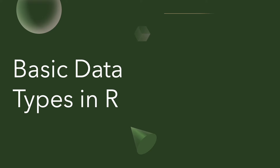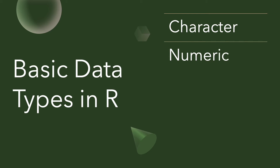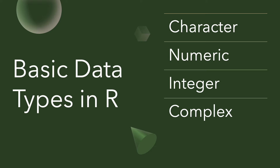In R we have the character data type, which takes individual characters — alphabets, numbers, or special characters. Then we have the numeric data type, which can take any kind of numbers: whole numbers, natural numbers, integers, or decimal numbers. We also have a specific numeric type called integer, which only takes integers. Then we have complex for complex numbers, and lastly boolean or logical, which takes only true and false values.